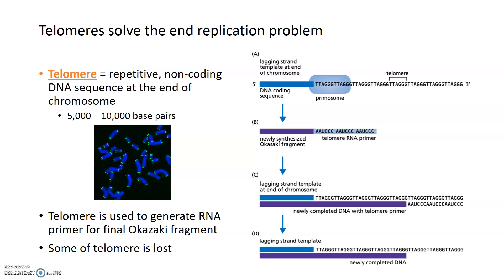Telomeres are long, non-coding, repetitive DNA sequences at the ends of chromosomes. You have a coding sequence that actually encodes the genes, and then you have a telomere at the extreme three prime end that has all of these repeats that don't code for any proteins. Telomeres can be anywhere between five and 10,000 base pairs long, and you can see them labeled here in green in this image. What telomeres do is allow a place for an RNA primer to be generated for that final Okazaki fragment or final piece of the lagging strand, so that none of the DNA coding sequence is lost.